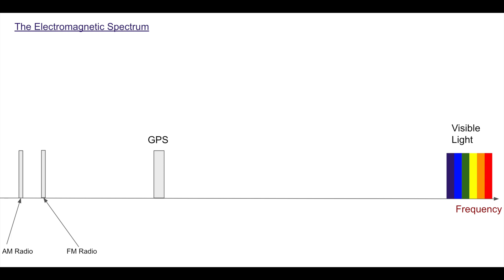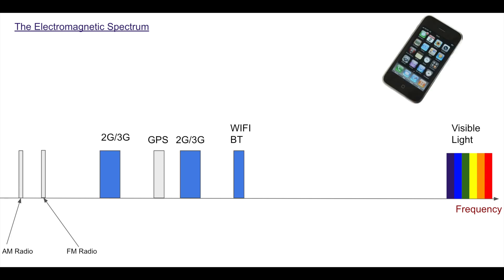We start with the electromagnetic spectrum. For reference, got some AM radio waves down at low frequency, FM, GPS, very high frequency and stuff like visible light, higher than that is x-rays. So iPhone comes along and they take up a little bit of the spectrum. You got the 2G, 3G bands, Wi-Fi and Bluetooth, but that's about it.